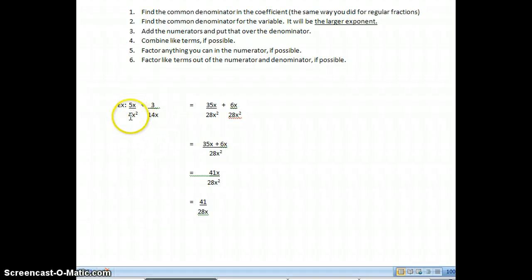I'm going to start off with 5x over 4x squared plus 3 over 14x. Now first thing is just find the common denominator with a coefficient the way you normally did with fractions. So I'm going to look at 4 and 14. My common denominator is 28. Now when I'm looking at my variables, I always find the common denominator with a larger exponent. So I've got x squared and x, so my common denominator is x squared.